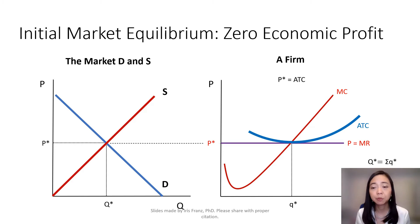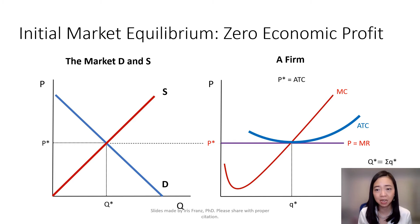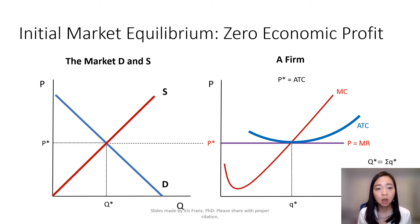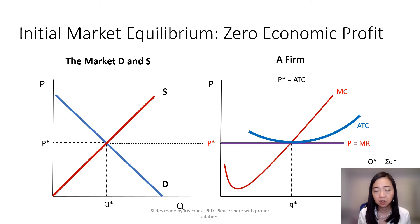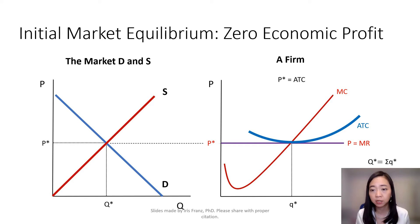On the next few slides, I'm going to explain why in the long run all firms will be making a zero economic profit. We start with the initial market equilibrium, where demand and supply determine that price is P*. Each firm is going to take P* as given, and you can see that a single firm is making a zero economic profit because price P* is exactly equal to average total cost.